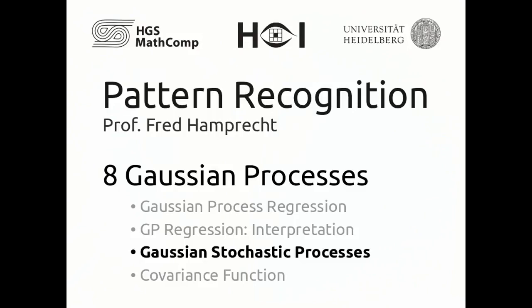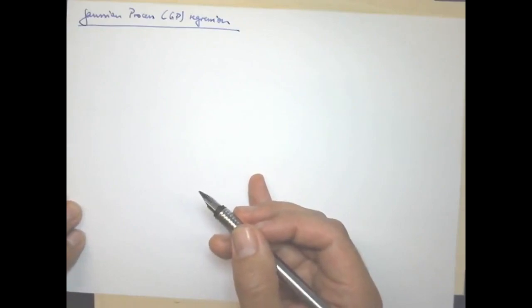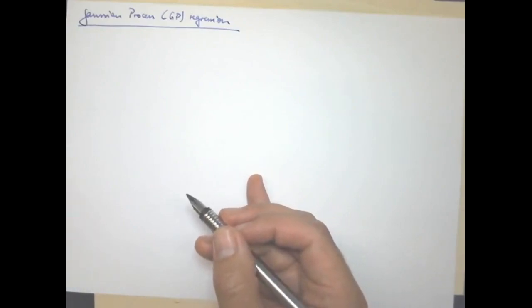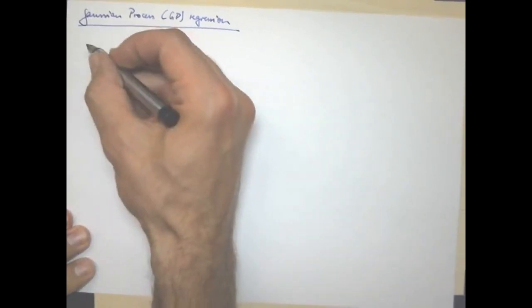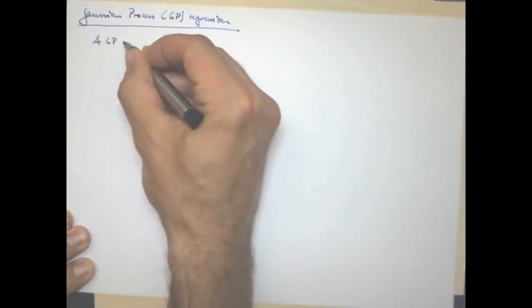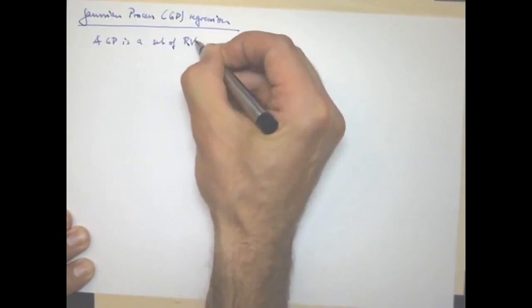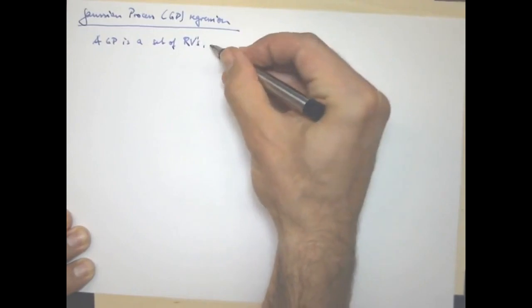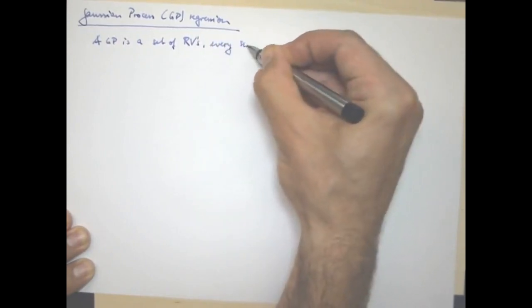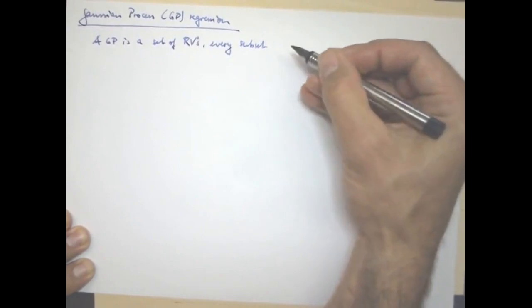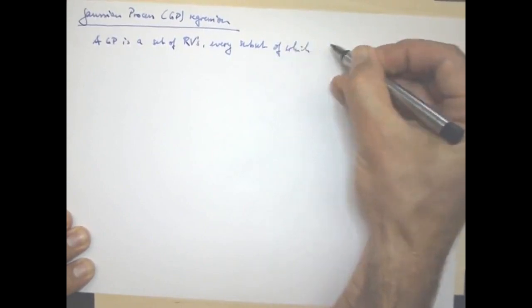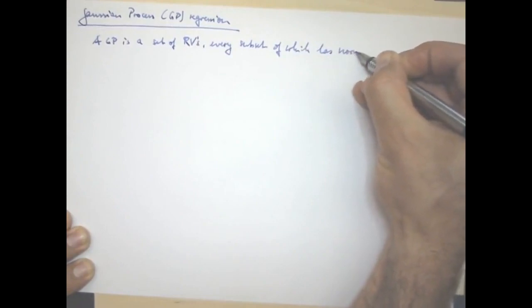The Gaussian process is often abbreviated as GP. First, what is that? The Gaussian process is a set of random variables, every subset of which has a Gaussian distribution.